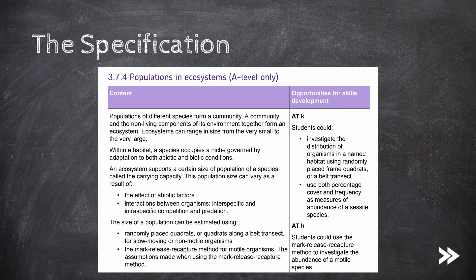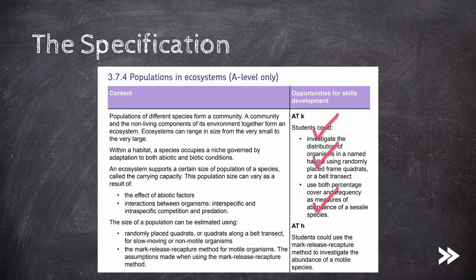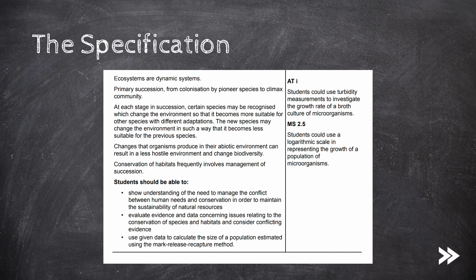That covers populations and ecosystems. We have covered the definitions of community and ecosystem, how ecosystems can range in size from the very small to the very large, how a species occupies a niche governed by adaptations to both biotic and abiotic conditions, what carrying capacity is and how it varies due to abiotic factors, interspecific and intraspecific competition and predation, how to estimate population sizes using randomly placed quadrats, belt transects, and the mark-release-recapture method including its assumptions, primary succession from pioneer species to climax community, how biodiversity changes in the process, and finally conservation.